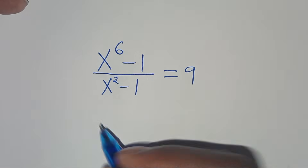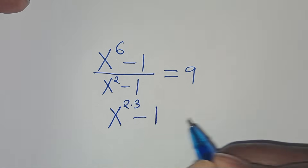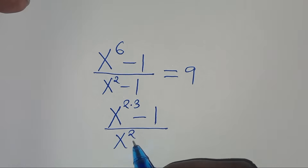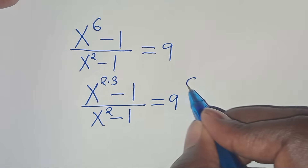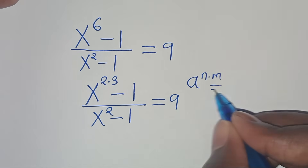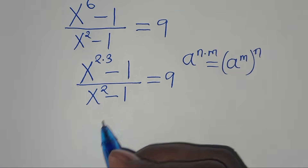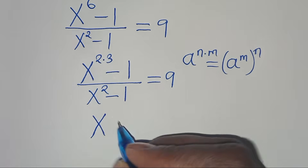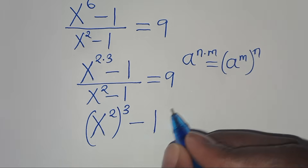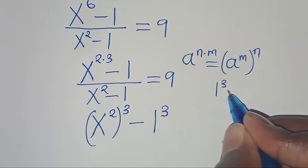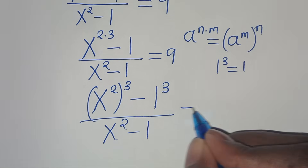We can express x to the power of 6 as x to the power of 2 raised to the power of 3, since x to the power of 2 times 3 is in the form of a raised to the power of n times m, which equals a to the power of m raised to the power of n. So we have x squared raised to the power of 3 minus 1, and we can express 1 as 1 to the power of 3. Divided by x squared minus 1, this equals 9.